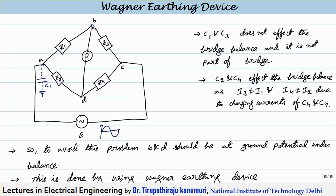Similarly, the potential at point B — because with respect to A, B is at a lower potential — but again between B and the earth, another capacitance will be formed. This is also another stray capacitance with respect to earth. Remember, stray capacitance can also be formed between points A and B. Generally, while designing the bridge circuit, we select the components in such a way that this effect of stray capacitance between A and B is overcome. So the Wagner earthing device is mainly used for stray capacitance with respect to earth.